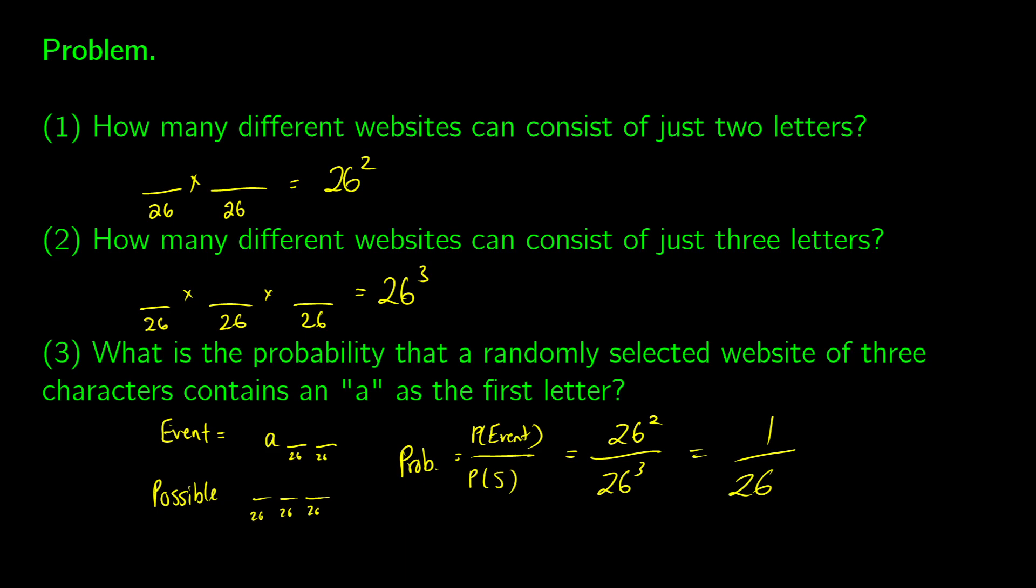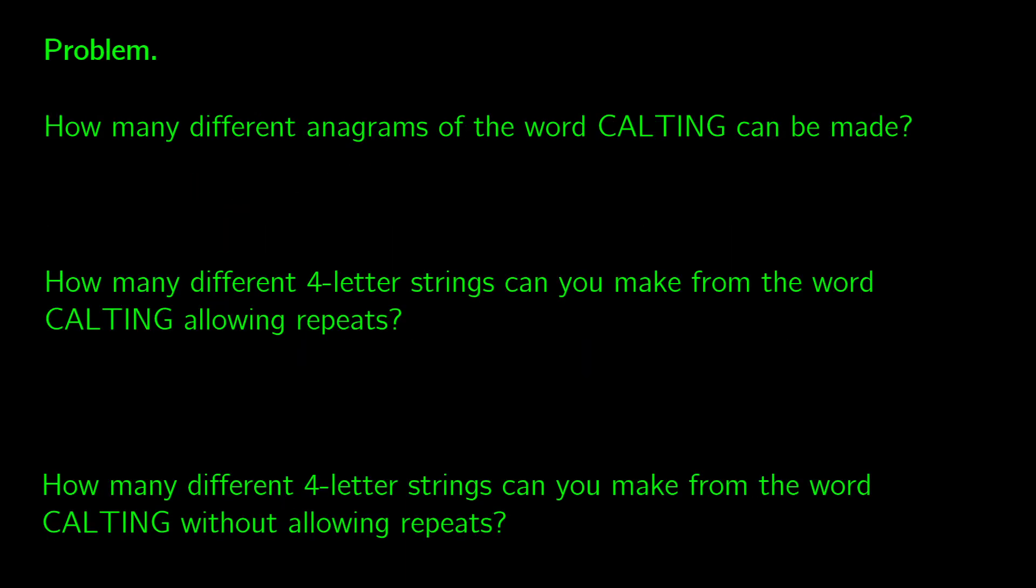So with this being said, that was one problem. We don't have any sort of no repeat rules here, but I'll show you that in a second problem. So in the second problem, we're going to create anagrams of words. So this means that we're rearranging the letters in words. So how many different anagrams of the word CALTING can be made? Now the thing about anagrams is that an anagram allows no repeats. You get seven letters, you have to use those seven letters.